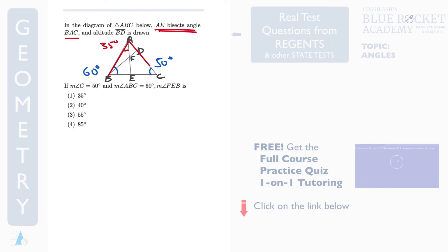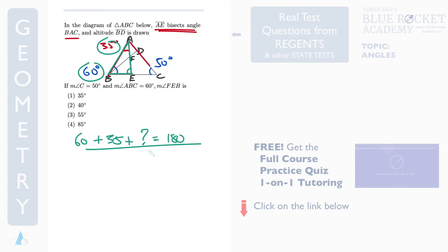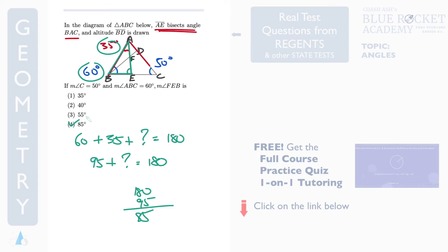Our final task is to find the measure of angle FEB. Looking at this green triangle, you've got 60 here and 35 here. So 60 plus 35 plus how much equals 180? 60 plus 35 is 95, and 180 minus 95 gives you 85. Therefore 85 degrees is your answer.